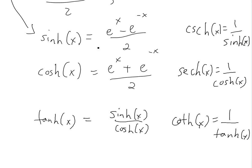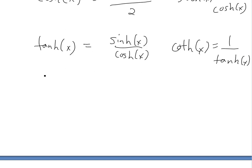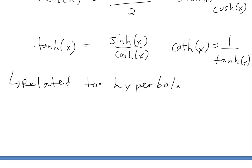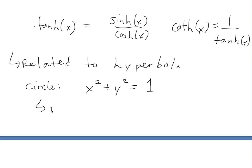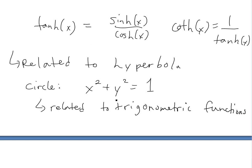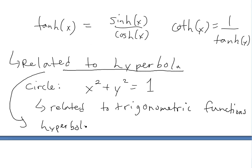I'll show you why it's called hyperbolic functions. It's called hyperbolic because it has the same relation to the hyperbola - as I showed in my other video - in the same way that the trig functions are related to the circle. So if you have a circle with radius 1, you have x squared plus y squared equals 1. The hyperbola, on the other hand, is where the hyperbolic functions come from - x squared minus y squared equals 1.